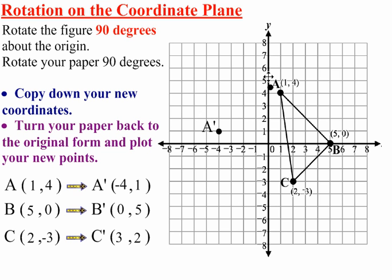B prime is 0, 5. 0 and 5 up, and you label that as soon as you put the point down.